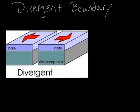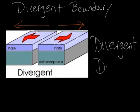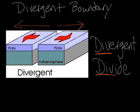Here we have a divergent boundary. The arrows are going away from each other — in two different directions, splitting apart. The strategy from Mr. Comerford's song is 'divergent divide.' They both start with D-I-V. Divergent — they divide, they split apart, they separate. That's a divergent boundary.